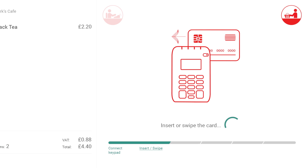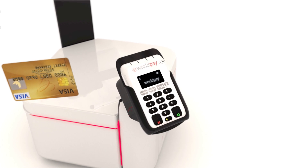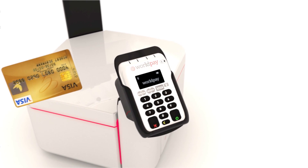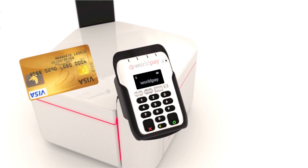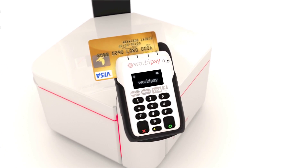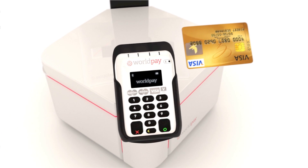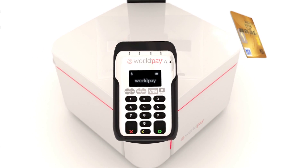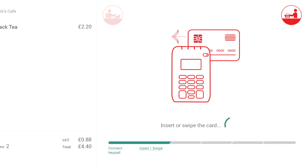In the event the customer does not have a chip and PIN card or there's a problem reading the chip, you can still complete the transaction by swiping the magnetic strip on the card through the top of the payment device.